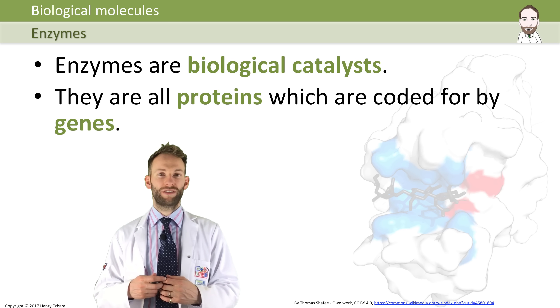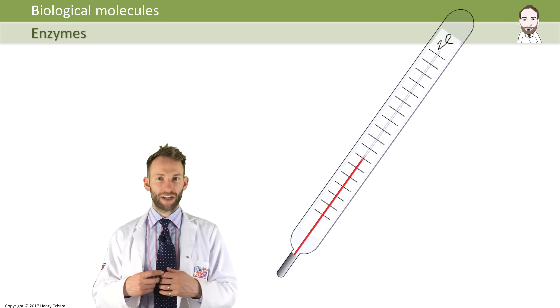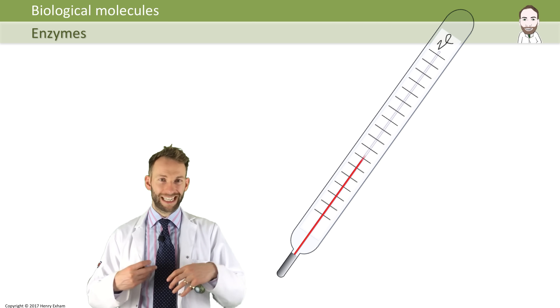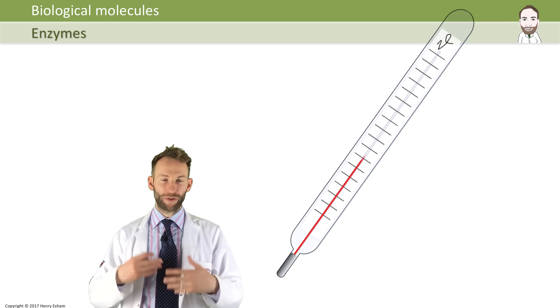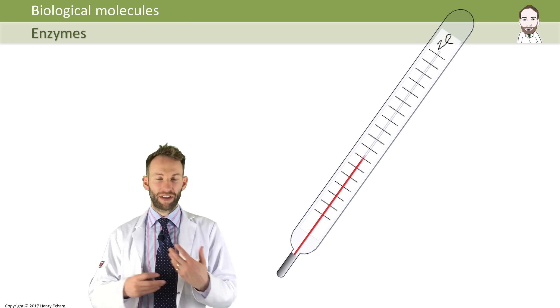The reason you need them to catalyze metabolic reactions is because our body temperature is 37 degrees Celsius, and this is actually, although quite warm compared with some living organisms, not that warm for a chemical reaction. For the speed of a chemical reaction, you'd like reactions to happen at a higher temperature.